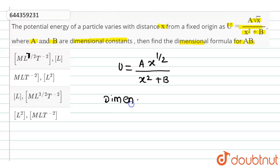So we can say that dimension of B is equal to dimension of x square. So here dimension of B will be equal to, as x is distance, its dimension will be L. So the dimension of x square will be L2. So here we can say that the dimension of B is nothing but L2.